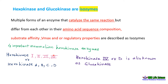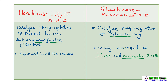Out of these four hexokinases, hexokinase 4 or hexokinase D is referred to as glucokinase. Hexokinase and glucokinase are referred to as isozymes because they catalyze the same function, that is phosphorylation, but the substrates they are phosphorylating are different. Hexokinase 1, 2, 3 (hexokinase A, B, C) catalyze the phosphorylation of glucose, fructose, and galactose, whereas glucokinase can catalyze the phosphorylation of glucose only.